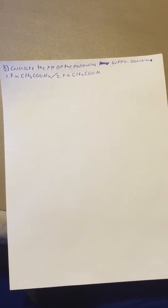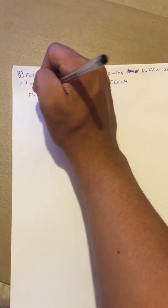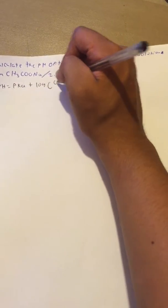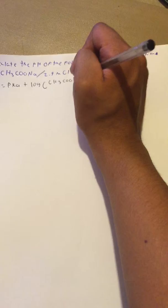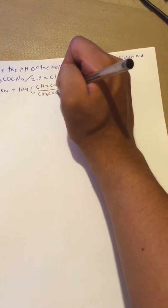Problem number eight from homework 16. Calculate the pH of the following buffer solution: 1.9 moles of CH3COONa over 2.9 moles of CH3COOH. For the pH, the formula is pKa plus log of CH3COO⁻ over CH3COOH.